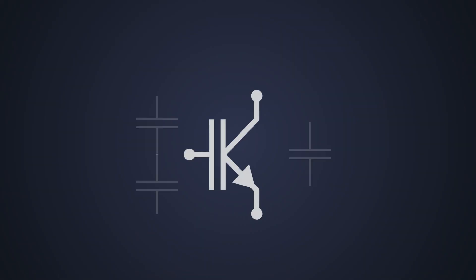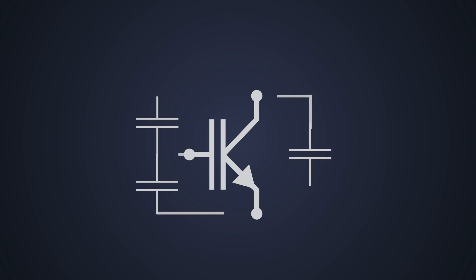Just like MOSFETs, there are parasitic capacitances present inside an IGBT. If we see this simplified equivalent circuit of an IGBT, we can see there are capacitances between gate to emitter, gate to collector, and collector to emitter.